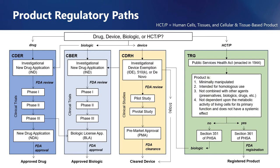If an HCTP is determined to be: 1) minimally manipulated, 2) intended for homologous use, 3) not combined with other agents, and 4) not dependent upon the metabolic activity of living cells for its primary function and not having a systemic effect, it will be regulated under Section 361 of the Public Services Health Act, meaning that it must be registered with the FDA — not approved. HCTPs that don't fit these criteria must follow more standard approval processes.